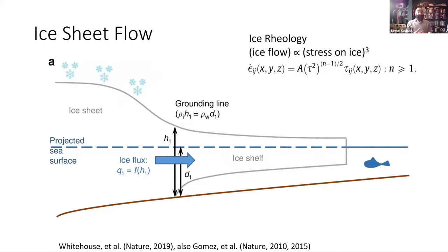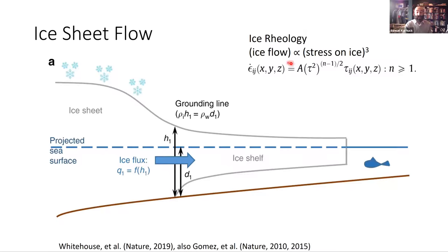Here we come back to the effects of the disintegration of the Larsen Ice Shelf. The ice itself that we saw fracturing out and going out to sea was floating, so that ice that broke apart didn't raise sea levels. Its disappearance changed the force balance on the glaciers that fed it — these glaciers began accelerating, draining the grounded ice and increasing sea levels. Ice is not an ordinary or linear fluid. If you push on water twice as hard, the water basically moves twice as fast. With ice, the relationship between the stress and strain rate — the rheology — is to the third or fourth power. Push on it twice as hard and it moves eight times as fast.